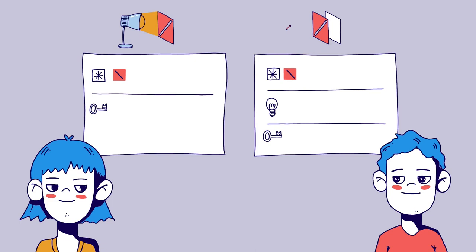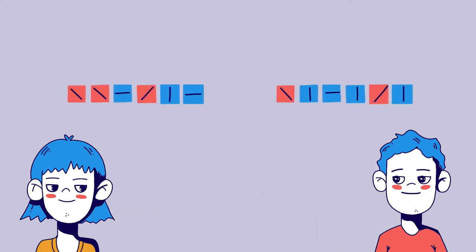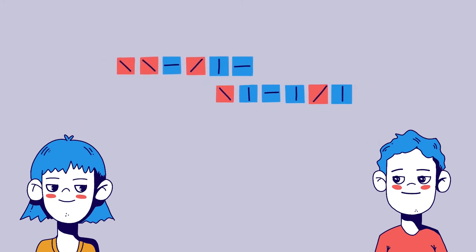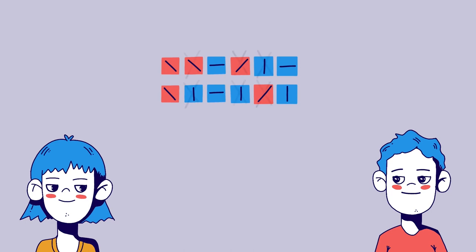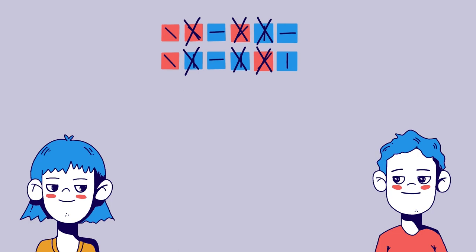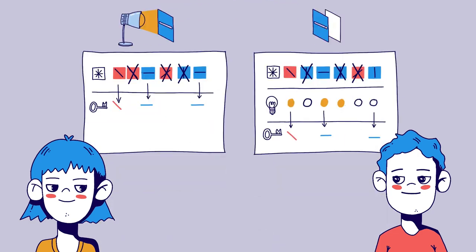Alice makes notes of the polarization with which she sent the photons off. And Bob makes a note of how he held his filter and whether light was received or not. Now, the two can talk publicly about how Alice polarized her photons and how Bob held his filter. Everyone can hear this. Whenever one person used the filter diagonally and the other vertically or transversely, that part gets deleted. From the remaining ones, they build their key.